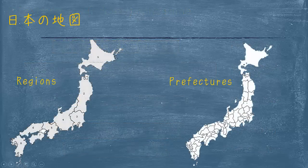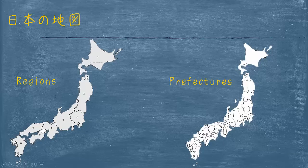Japan is actually broken up in different ways. The first way is that it could be broken up into a region — a larger area of land — or a prefecture, a smaller area of land.